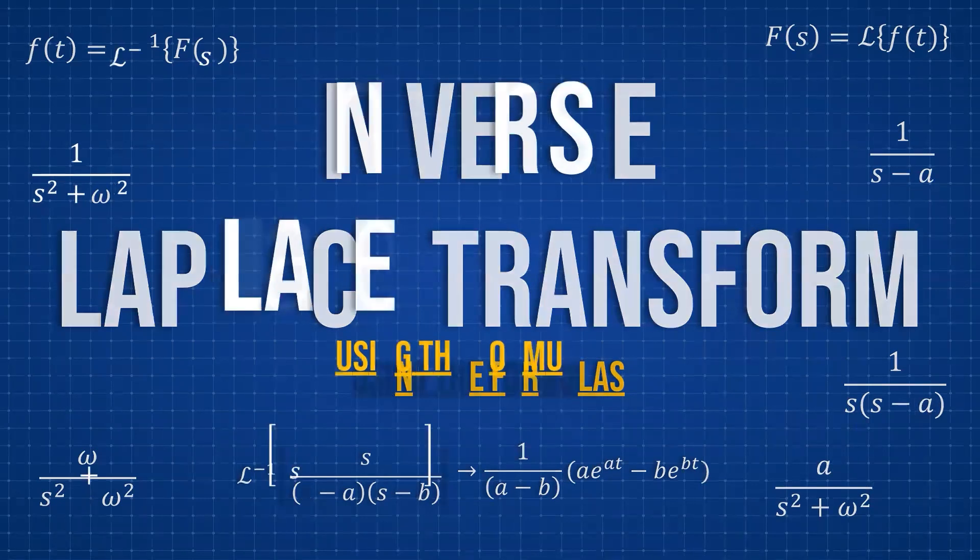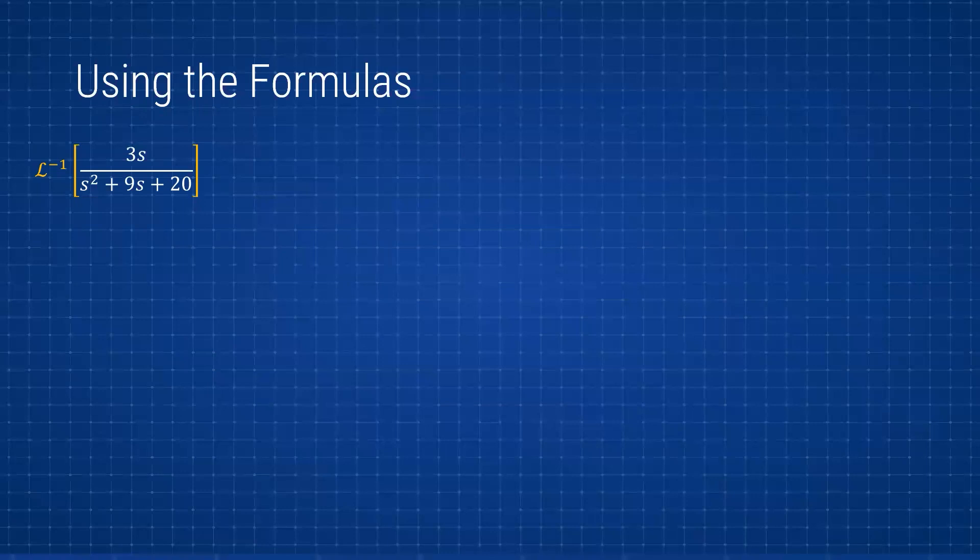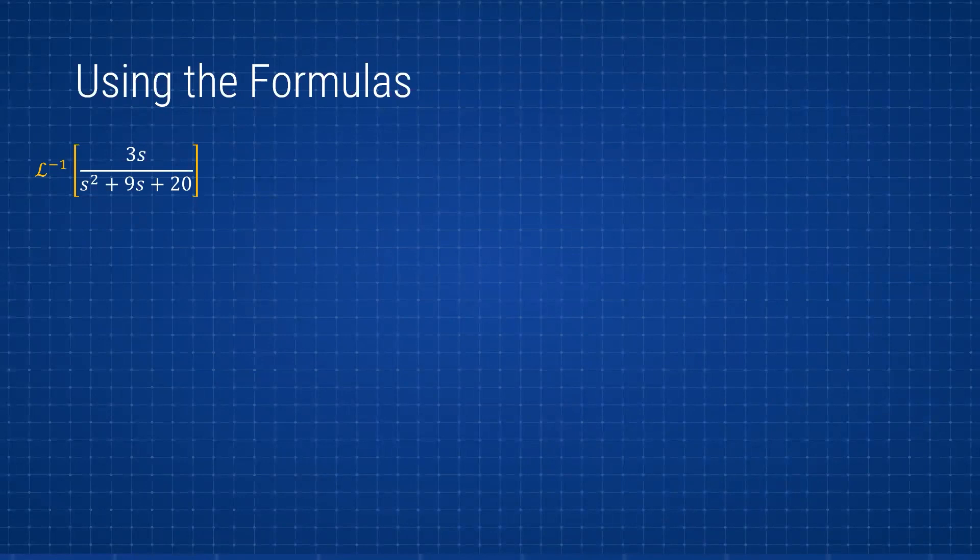Let's look at this problem. We did it last time: we have 3s over s² + 9s + 20. If you did not see the video where we solved this using partial fraction decomposition (PFD), the link is here at the top. Go look at it and you'll see that we're going to get the same answer, but this time we're going to solve it using the formula.